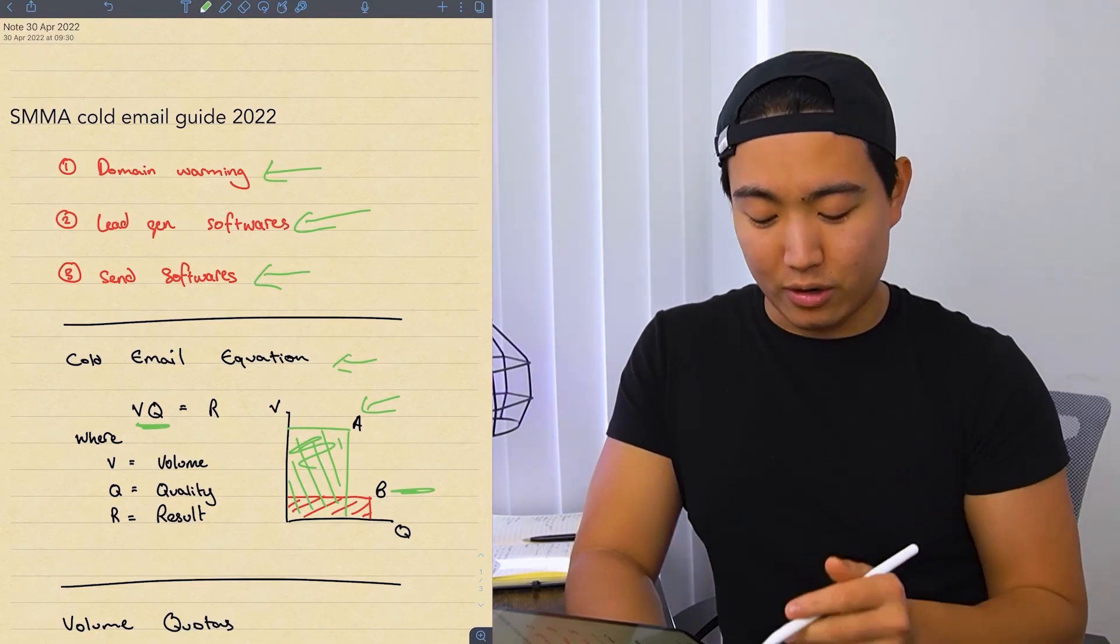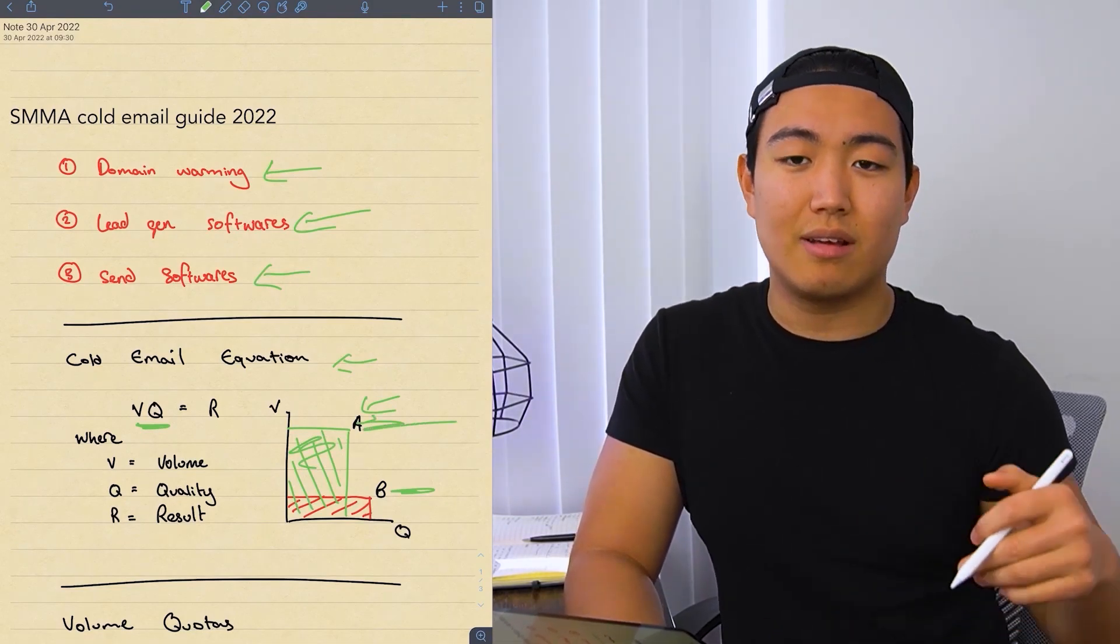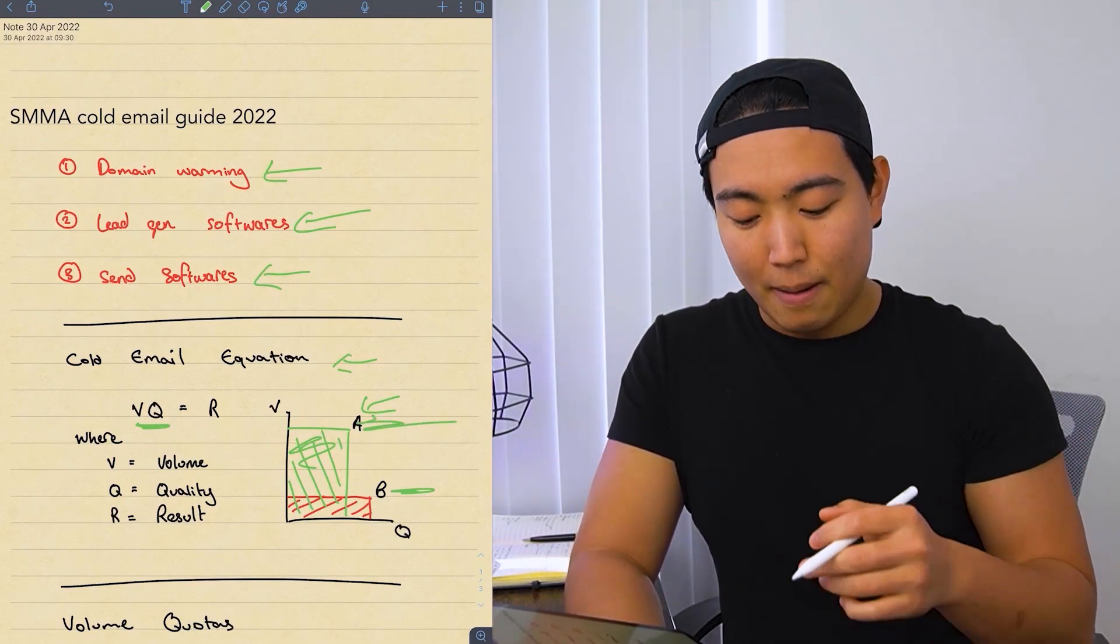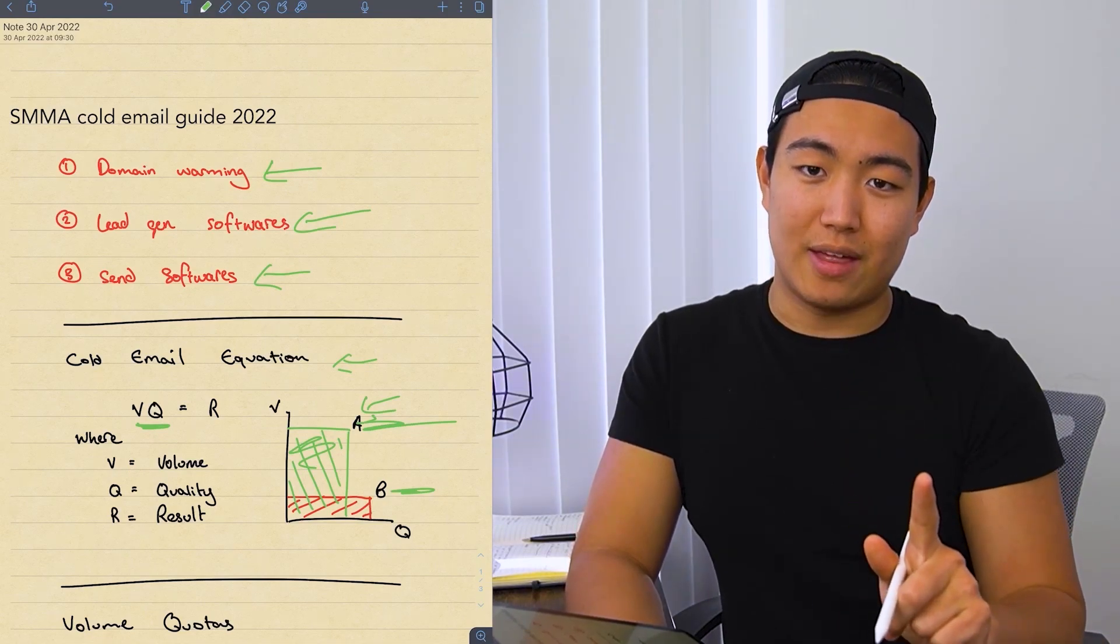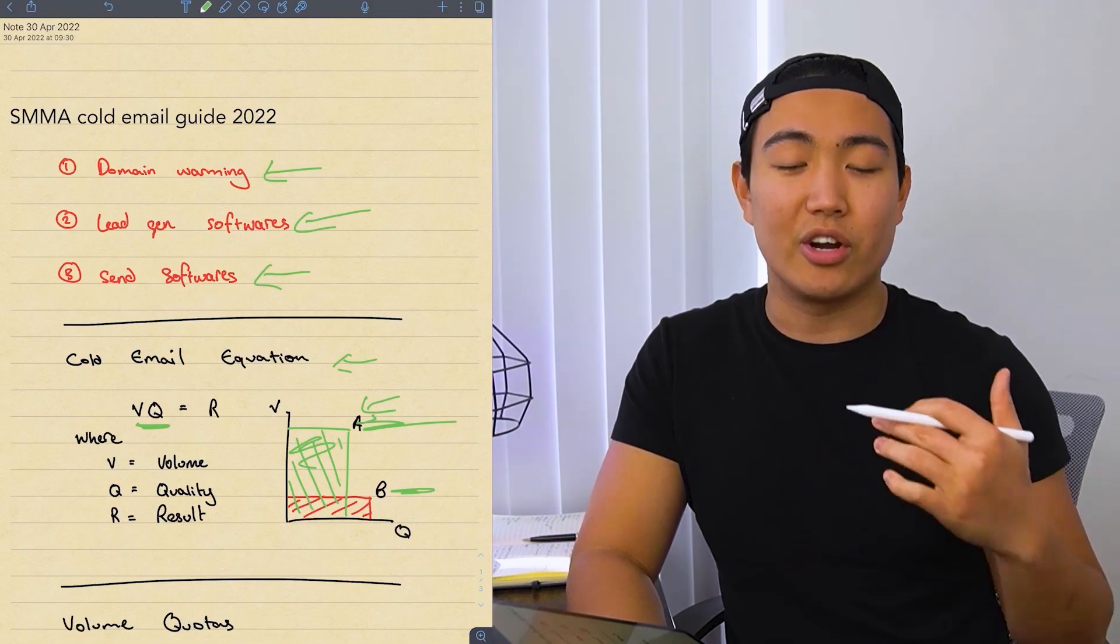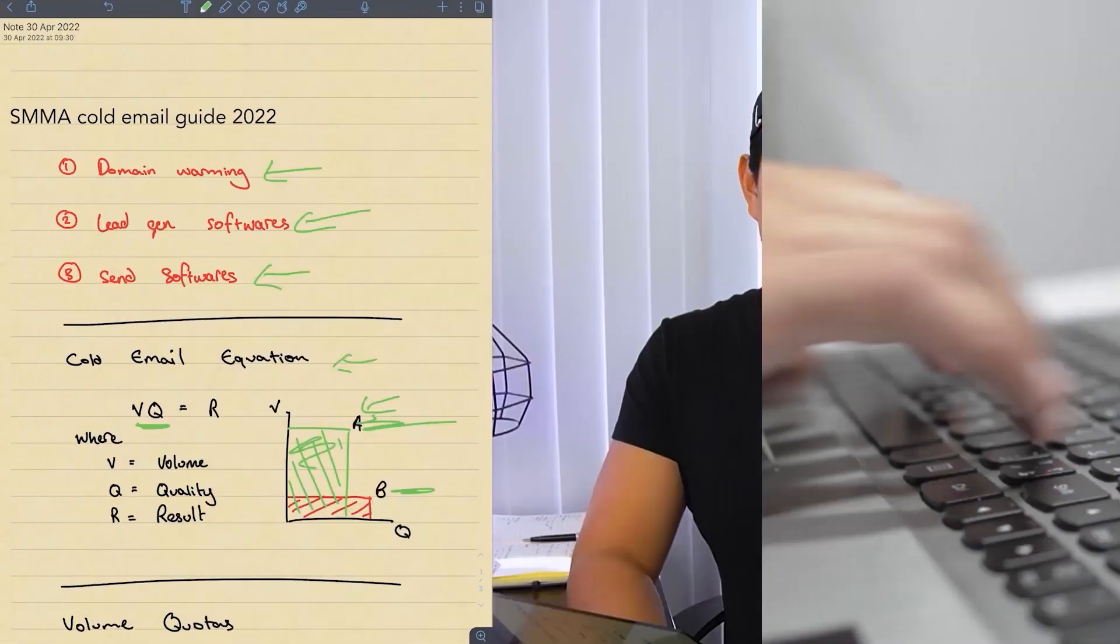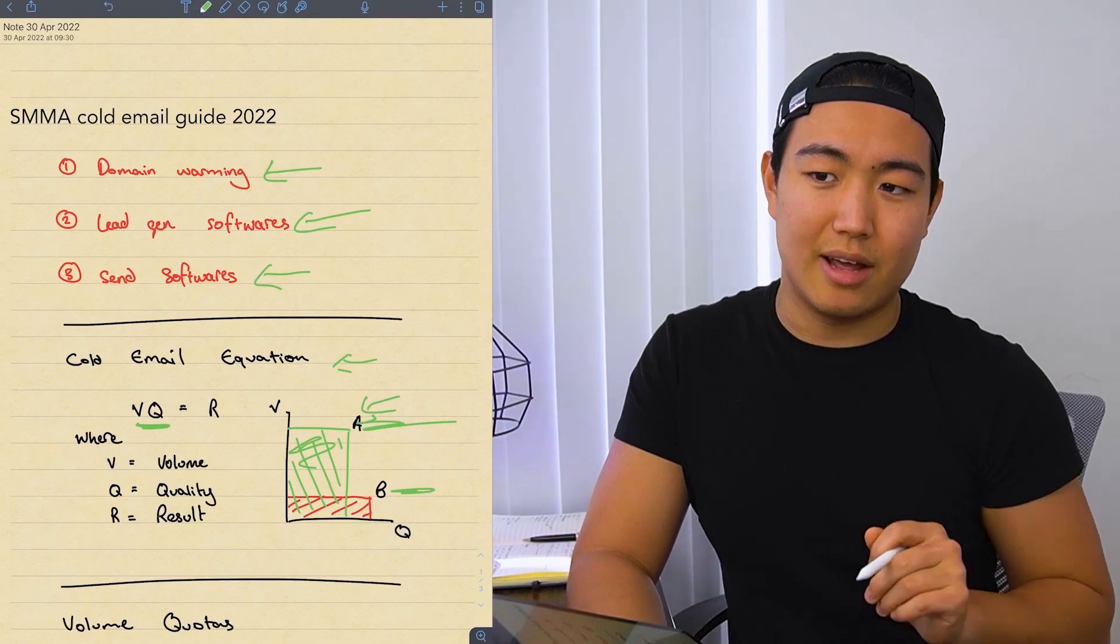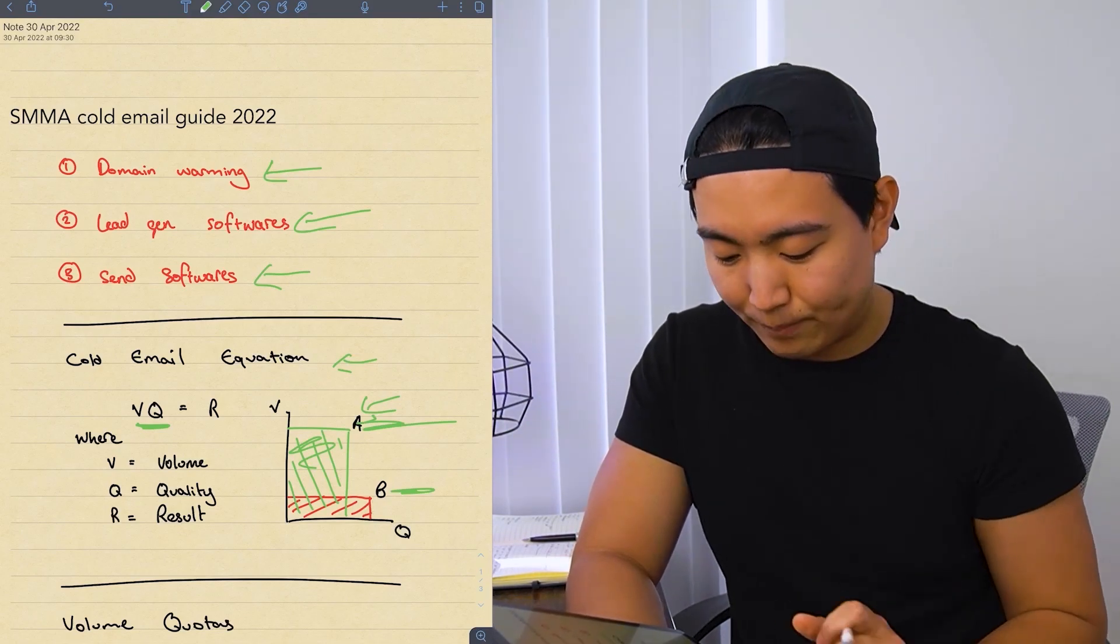So in the beginning, most likely you're going to be more like person A where your script writing just kind of sucks. But you can always compensate for that with massive volume, which is exactly how I got started. I wasn't very good at writing scripts. I got better through iteration, but because my volume was highest, I was able to sign between 15 to 20 clients in my first year.